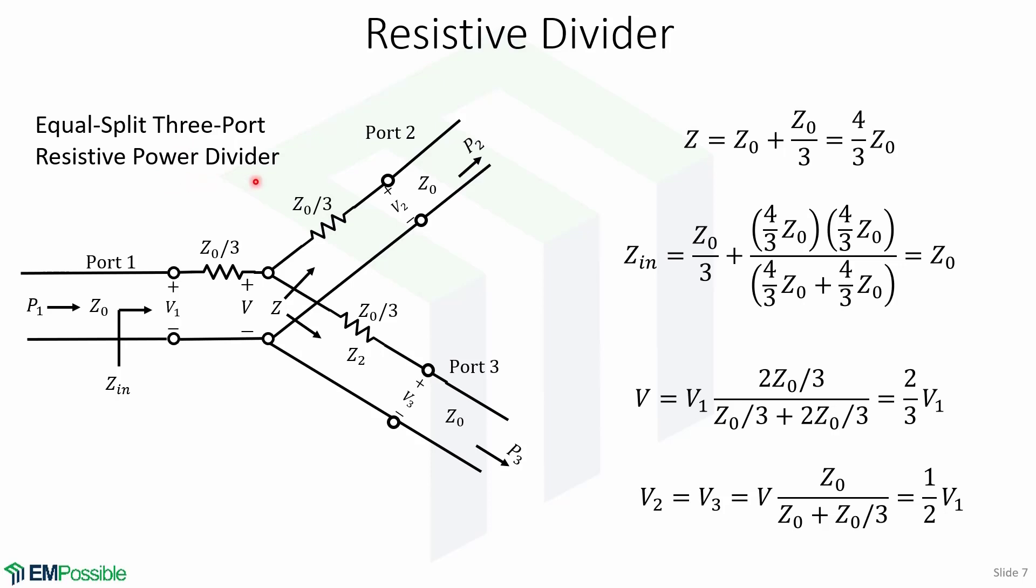This is achieved using three lumped element resistors, one at each port, and each having a value of Z0 over 3. This divider can be analyzed using simple circuit theory.